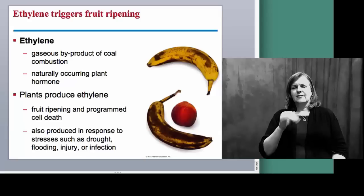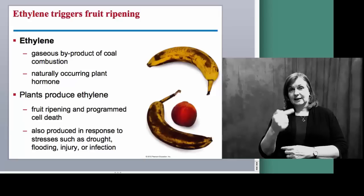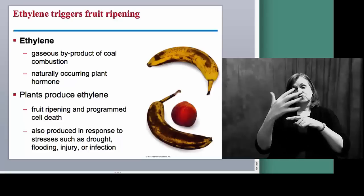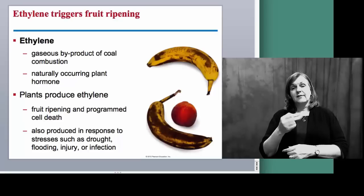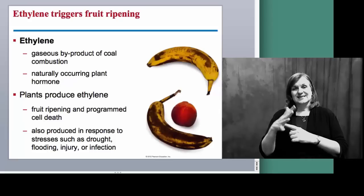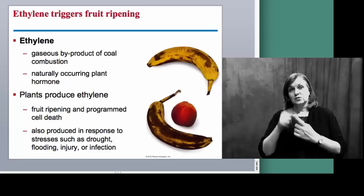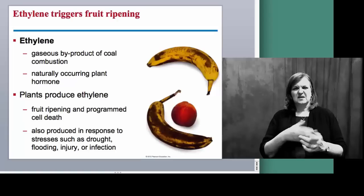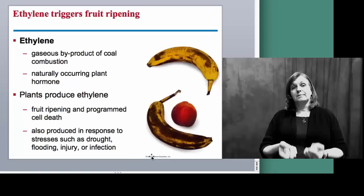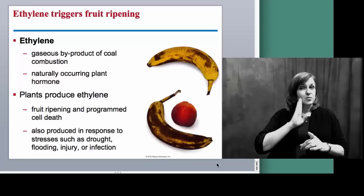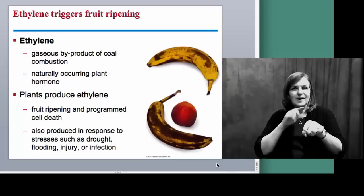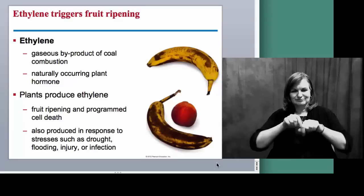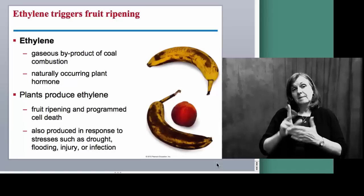Ethylene may be the only one of these hormones you've heard of. Ethylene is associated with the ripening of fruits, but also with the dropping of leaves in the fall in deciduous trees, and with the rotting of leaves to provide nutrients to the plant. We associate it here with something seemingly negative — it causes our bananas to brown — but keep in mind you are not the ultimate seed disperser. We talked in a previous video about how humans do not distribute seeds well.